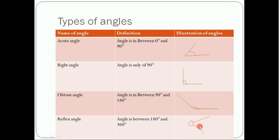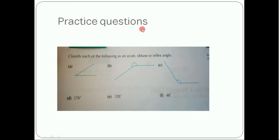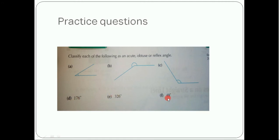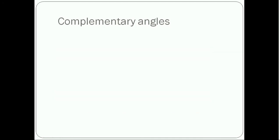These are practice questions. The question is: classify each of the following as an acute, obtuse, or reflex angle. You have to write the name of the angle — what type is A, what type is B, and what type is C. You can also tell for 176°, 326°, and about 48° which type of angles these are. You have to work on this.